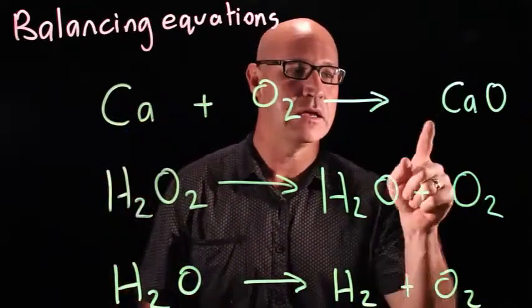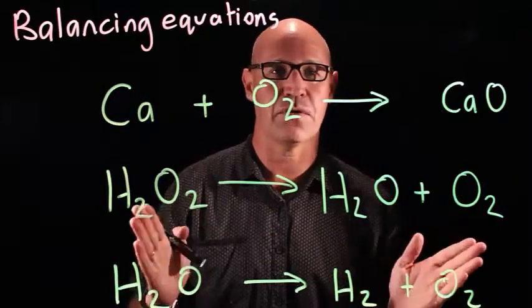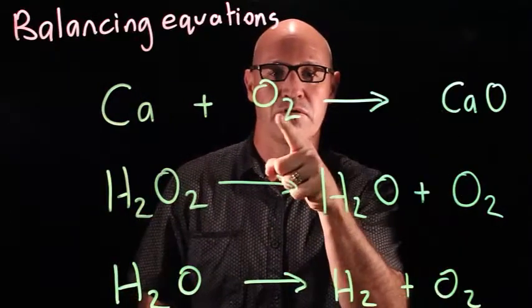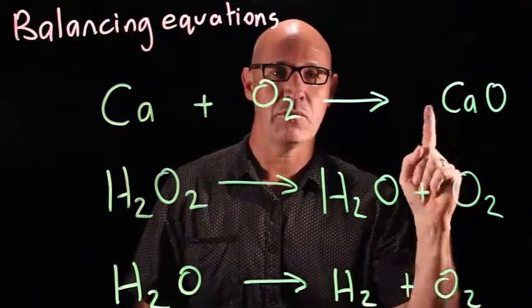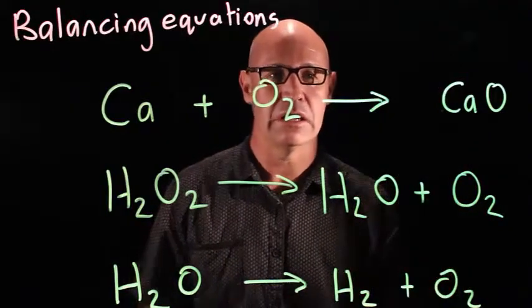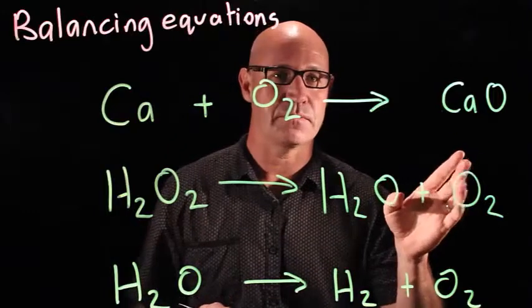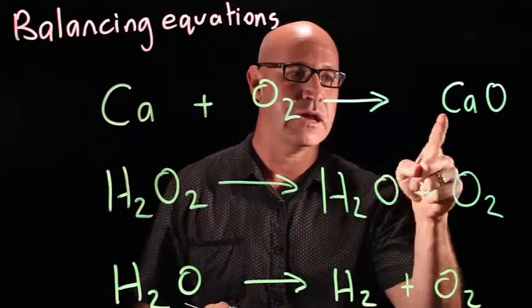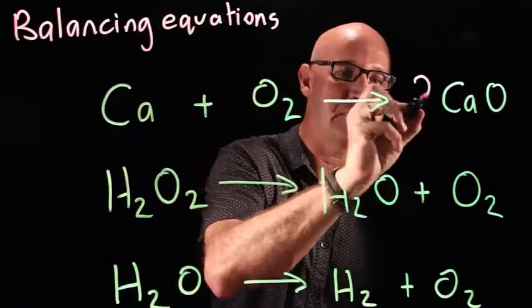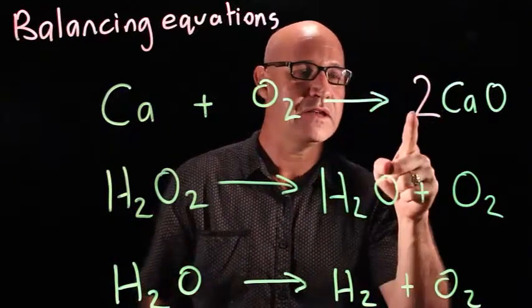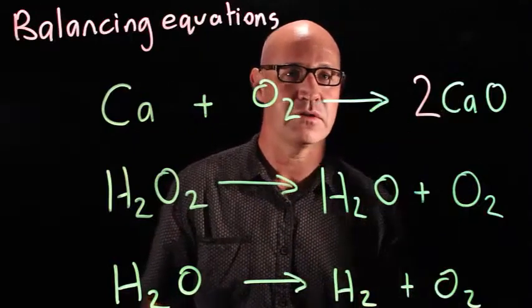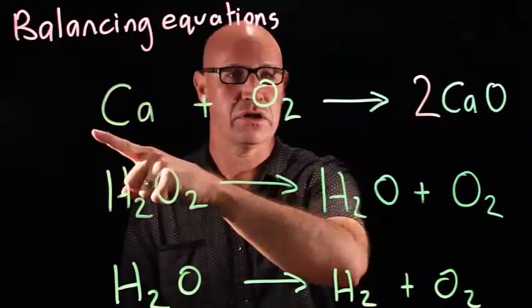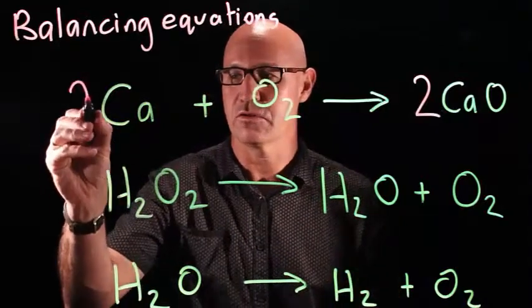We've got one calcium here and one calcium here, so that's fine. We've got two oxygen here and only one here. There's only one thing we can do here to fix this up, is we can put a coefficient in front of our calcium oxide, and we need to put a 2. So now that means we've got two oxygens, but we also have two calciums. So we need to go back to this side now and put a 2 here.